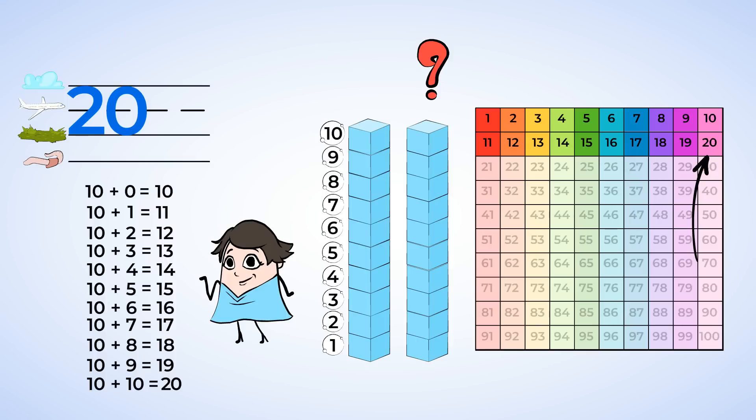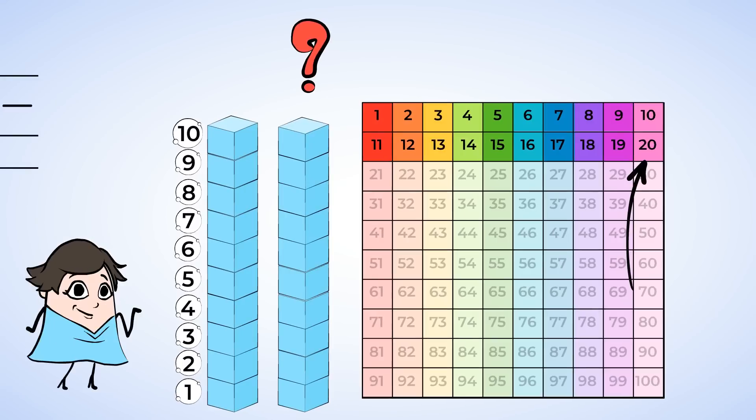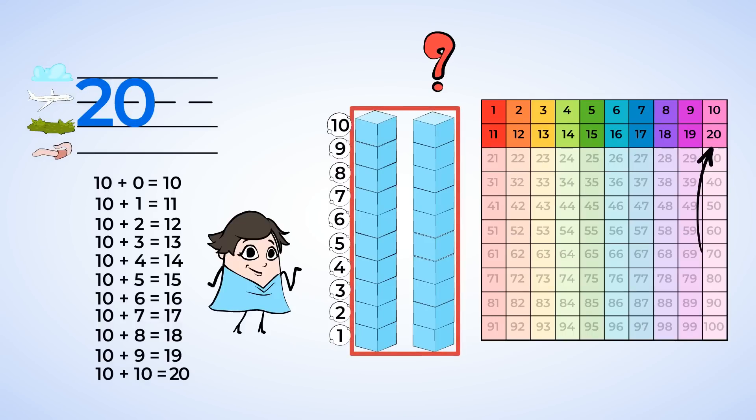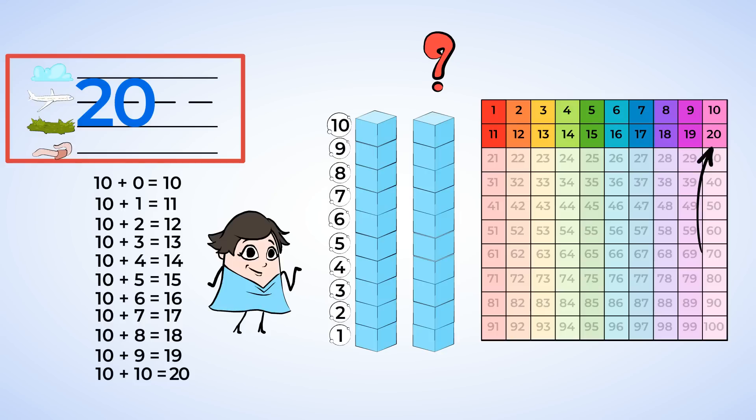We learned to count and write numbers to 20. To help, we can always check our 100s chart and look for what comes after 10. And we can also think about our blocks. Make a tall tower of 10, count your extra blocks, and write those numbers together. Awesome job today, my mighty friend. And I think you have a future in tower building.